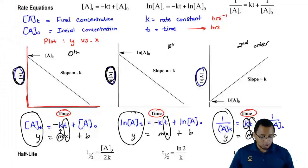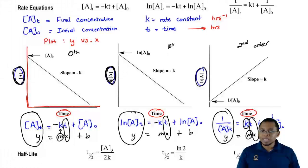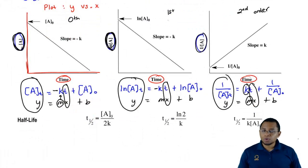Just remember, we can manipulate these integrated rate laws to basically match them up with Y equals MX plus B and in that way, we can plot Y versus X. Remember, your slope, which is M, is equal to your rate constant.